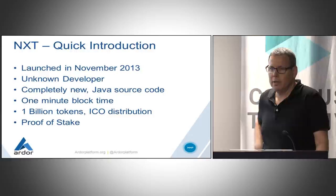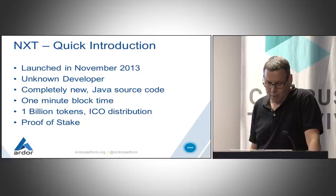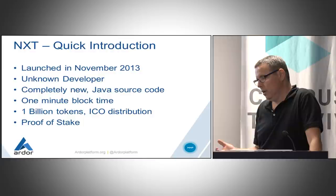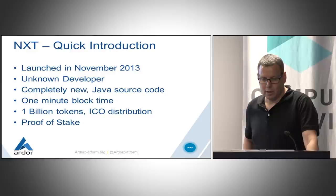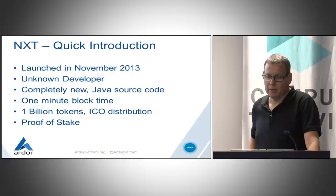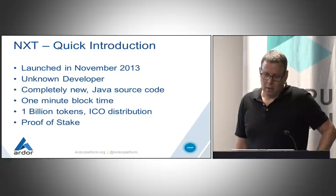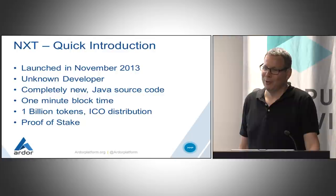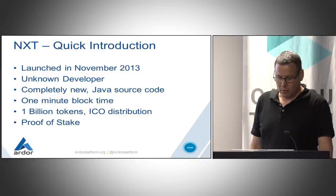Quick introduction to NXT. NXT is a blockchain, which is the basic infrastructure also used by Bitcoin and Ethereum. NXT is another protocol that implements a blockchain. It was launched in November 2013, by unknown developers that disappeared later. It's based on completely new source code written in Java. It has one minute block time. One billion tokens were distributed using what we now call an ICO to random people that registered on the BitcoinTalk forum. It's based on proof of stake, which I will explain in a moment.